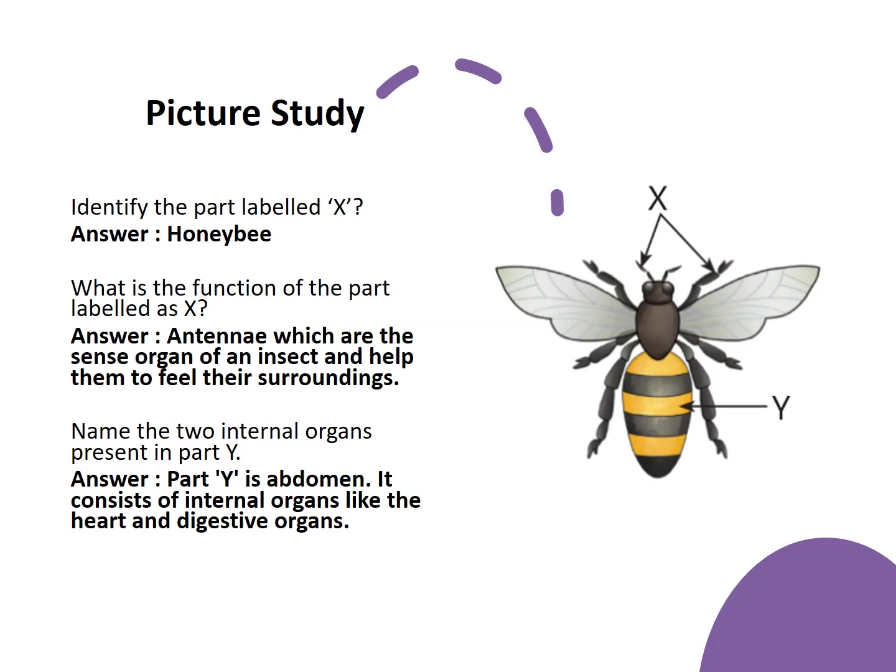Identify the part labeled X — the answer is honeybee. What is the function of the part labeled X? Antennae, which are the sense organs of an insect and help them feel their surroundings. Name the two internal organs present in part Y. Part Y is the abdomen, which contains the heart and digestive organs.